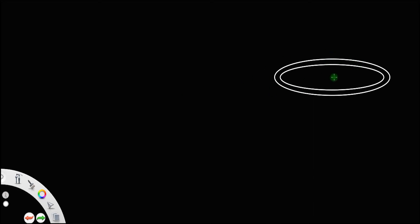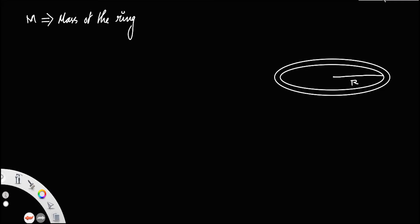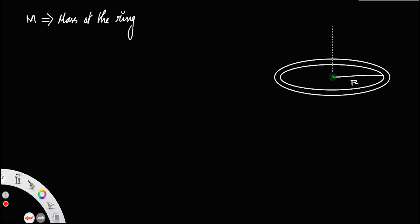Consider a ring of radius r and mass m. We need to find the moment of inertia of this ring about an axis passing through its center, perpendicular to the plane of the ring. Let us call that center as O. We need to find the moment of inertia of this ring about this red axis; let us call this axis yy'.